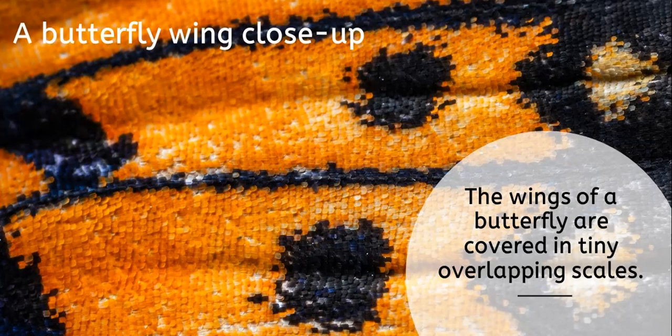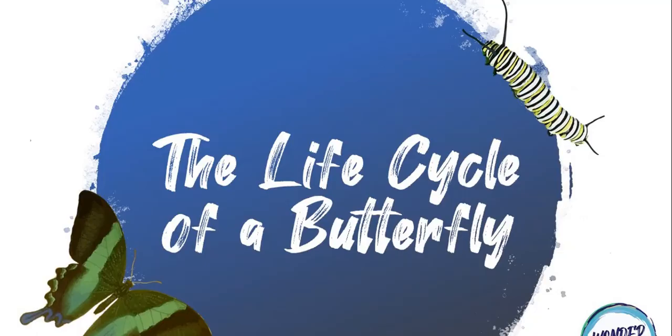Here's a really cool close-up picture of a butterfly wing. You can see that it's made of little scales, kind of like a reptile or a fish — just to see that similarity. They're really, really tiny, and they overlap. But let's move past what the body is made up of and talk about the life cycle.